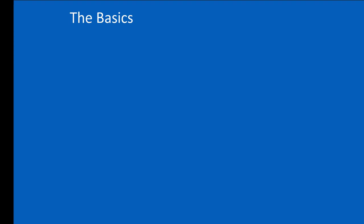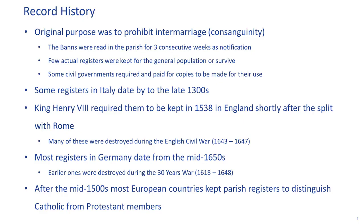Let's get started on the basics. The original primary purpose of the records was to check for consanguinity — intermarriage. Those of us who are a little older remember the banns published in church bulletins in the sixties. In Europe it was the same — they would announce that a couple was getting married. If anybody in the parish knew of any reason they shouldn't marry, such as being already married in another village or being first cousins, they would speak up.